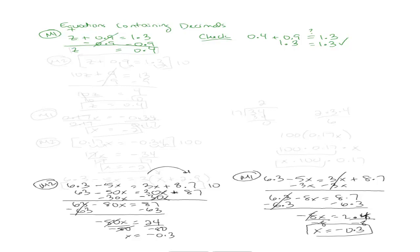That was using method one. Method two says let's use what we know about decimals to make our life easier. In some cases it'll be easier, in some cases it won't. So let's say we have the same problem, z plus 0.9 equals 1.3. Remember when we were working with fractions, we would multiply everything by the denominator to get rid of the denominators? We're going to do something similar here.